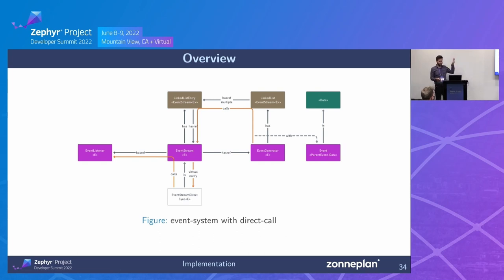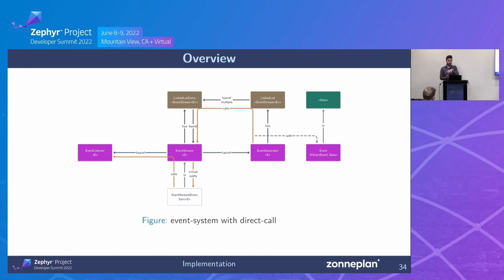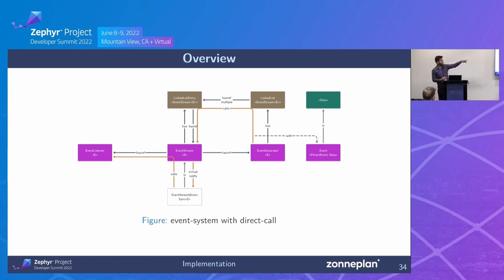The four biggest modules are: the listener, the stream, the generator, and the event. You may get flashbacks from Java publisher-subscriber, Qt signals and slots, or IPC in microkernels — something generating an event, something listening for it, something connecting the two, and something wrapping the data in between. In the synchronous version, the generator has a linked list of streams, and streams link to the listener. When notify is called, it goes through the linked list for every stream and calls the listener via virtual dispatch. The event encapsulates the data passed from generator to listener.